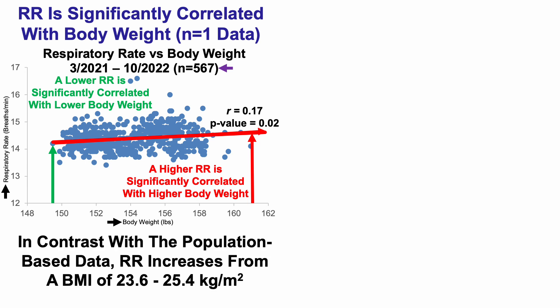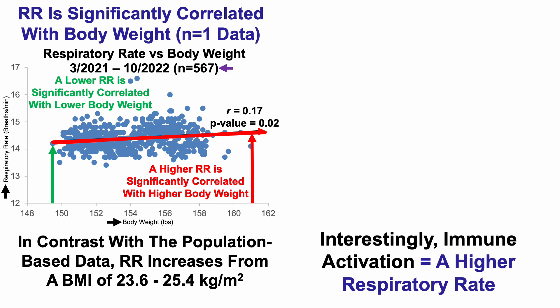These personal data contrast with the population-based study shown earlier. In my case, respiratory rate increases from a BMI of 23.6 up to 25.4, whereas in the earlier population study, respiratory rate declined from relatively low BMIs down to 25. In contrast, my respiratory rate increases as my body weight has increased.